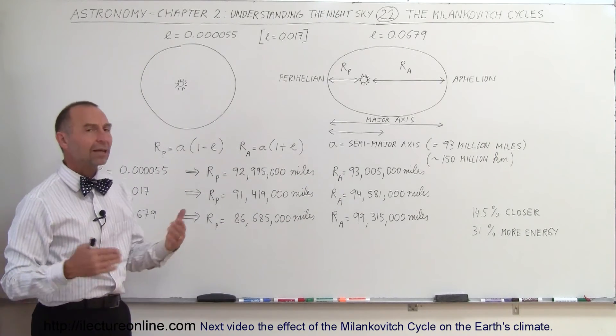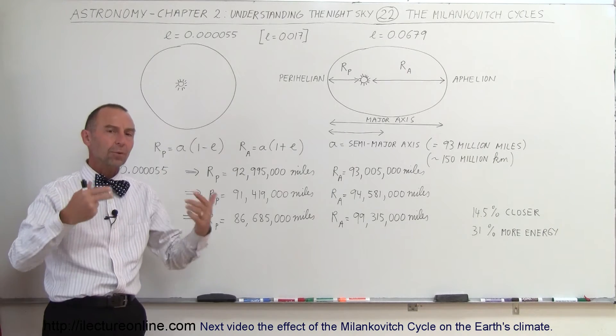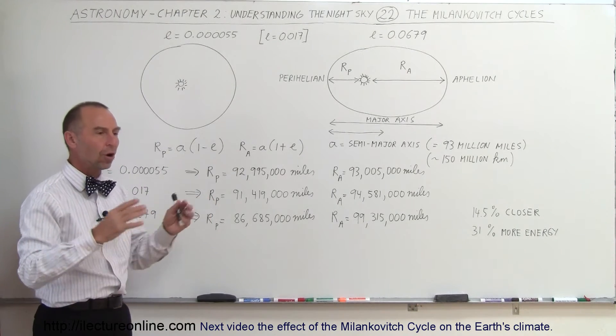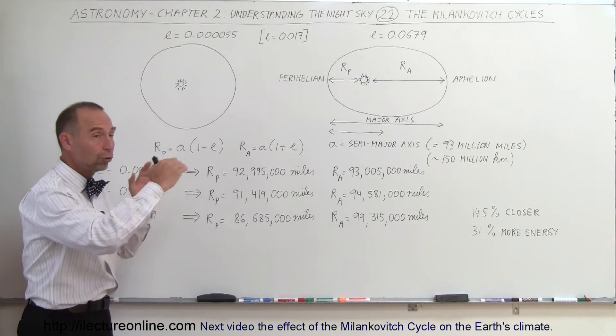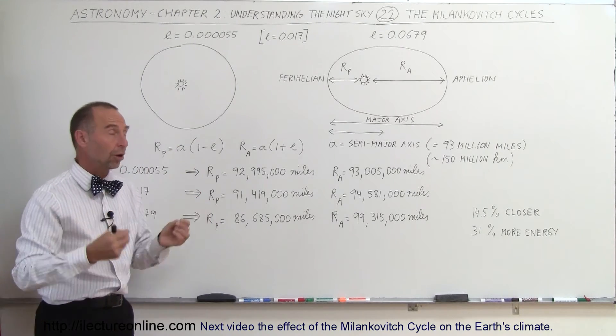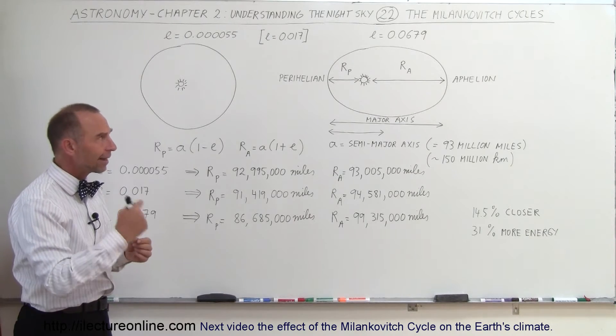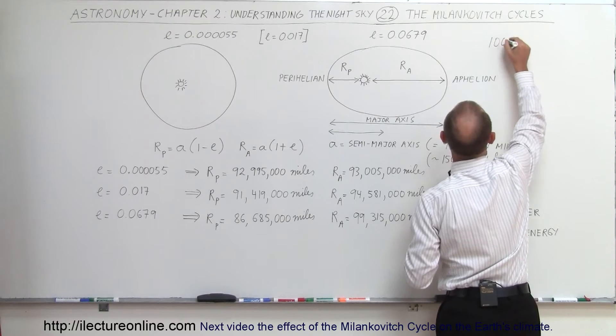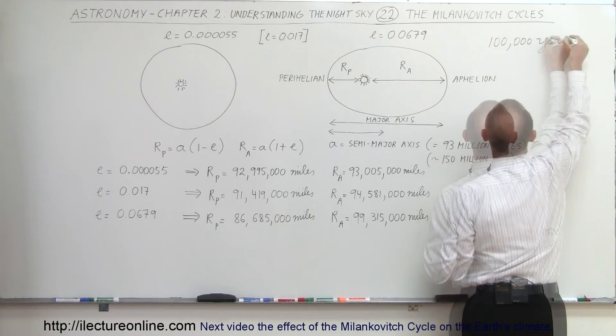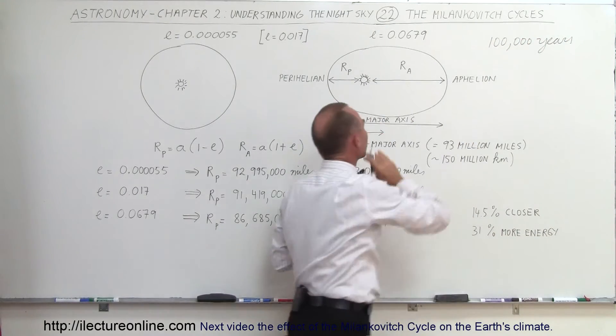Now, what are the Milankovitch cycles? Well, it's the cyclical process or the cyclical nature of the change of the orbit of the Earth becoming nearly circular to elliptical to a large extent. And that cycle goes in about 100,000-year cycles. So 100,000 years typically to go from one extreme to the other and back.